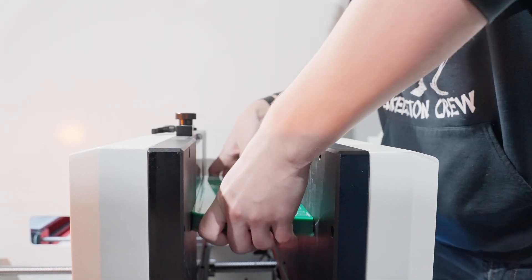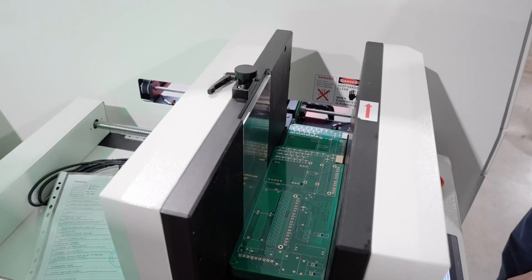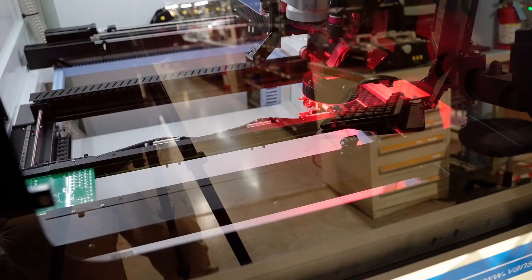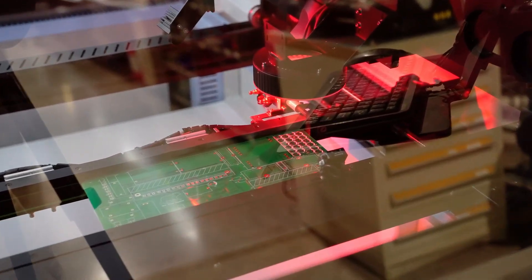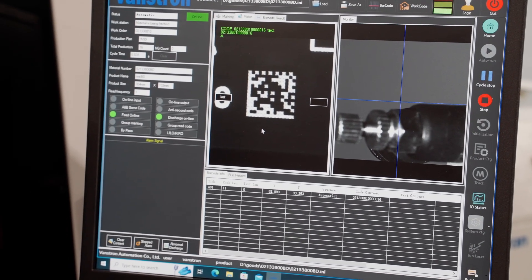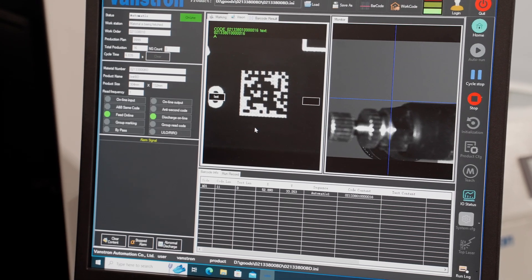The process begins at a machine called a board dropper. One by one, the bottom board is removed from the stack and conveyed to a UV laser. In less than a second, our UV laser marks a 2D barcode with 196 squares and a 14 by 14 data matrix.